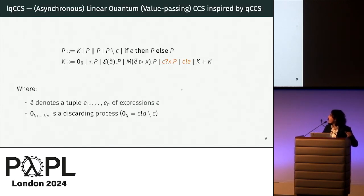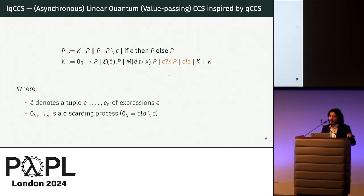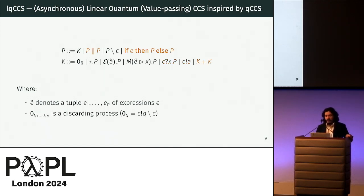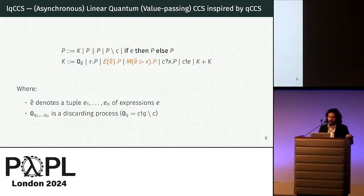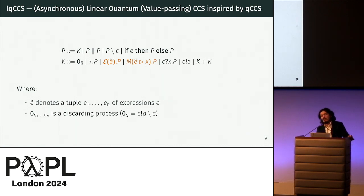For the calculus, we define LQCCS — a Linear Quantum CCS — inspired by a previous calculus, where we have value-passing communication with two operators, meaning we can send over a channel a classical value (a natural or boolean) or a quantum name. We do not send the quantum state directly, only a reference to some global state. Then we have operators for parallel composition of processes, non-deterministic choice, and boolean guards. For the quantum part, we have the application of quantum operations (superoperators) or a measurement where we bind the classical outcome to a variable.